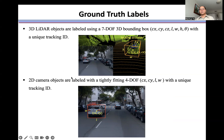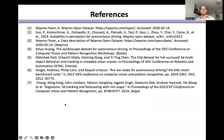We use 4DOF to describe a 2D camera object using 4 variables: 2 for the center of the bounding box, 1 for length, and 1 for the width of the bounding box, along with a unique tracking ID. For more details, please check the reference.